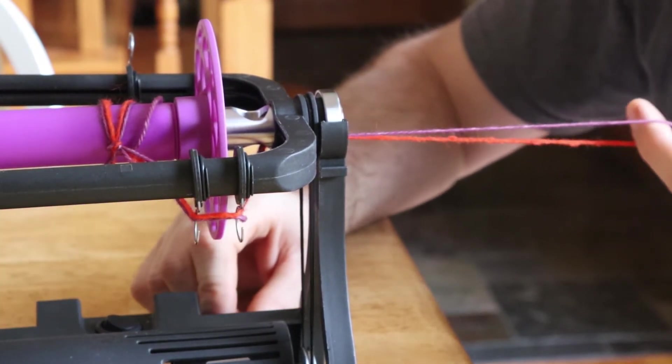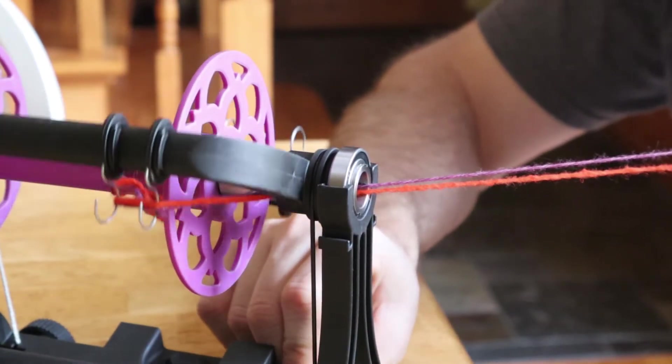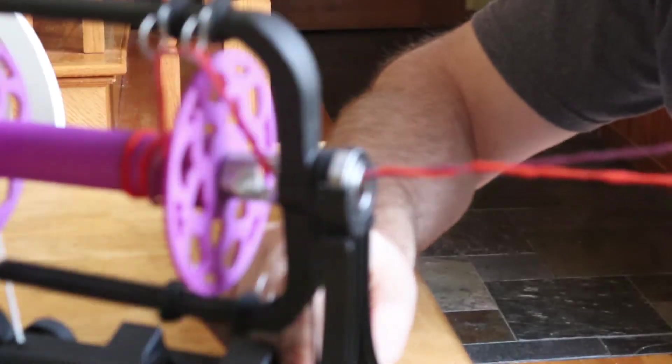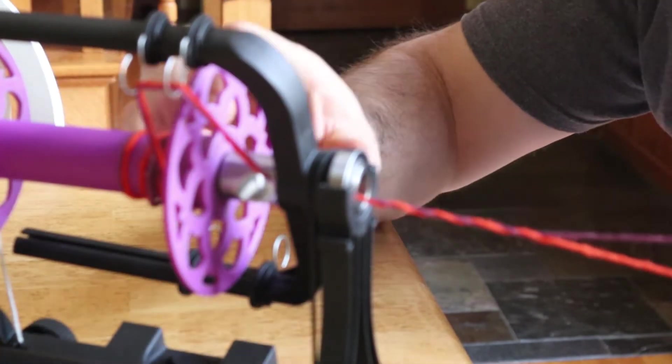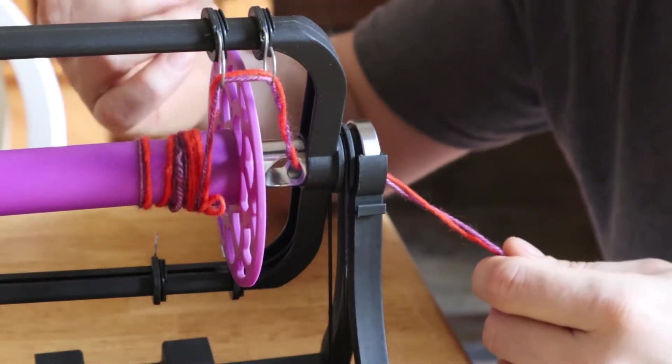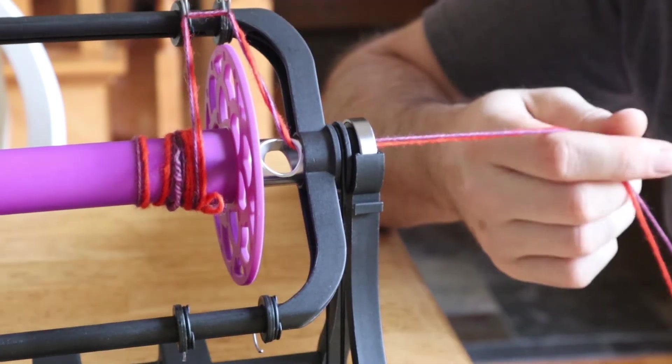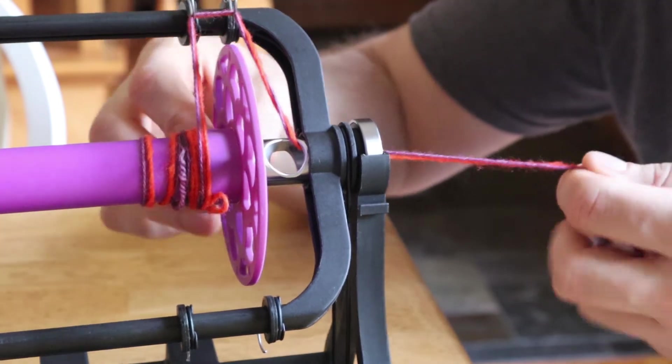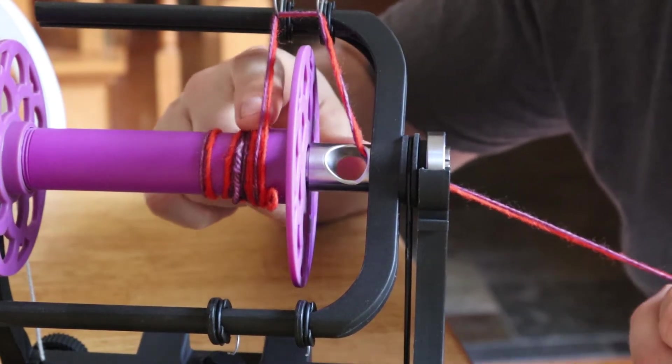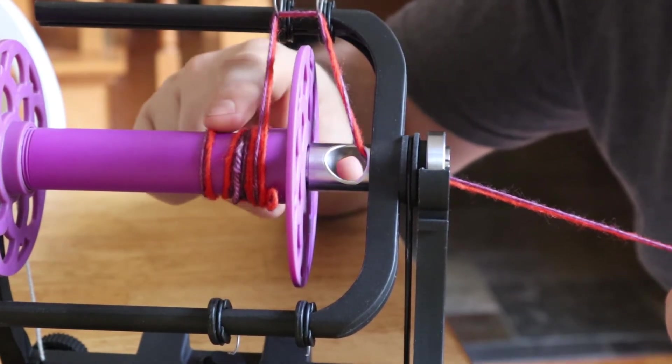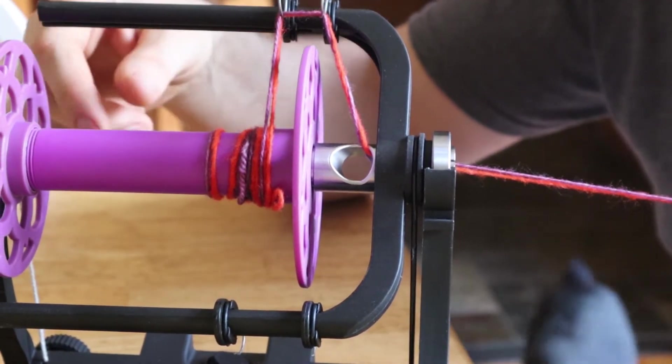So I have the tension set very high right now and what you're going to see is the bobbin is not even going to be moving and the yarn just goes directly onto the flyer. If you look at this yarn it's not twisted at all. There is a little bit of twist out here—you get one twist per rotation with this setup where the bobbin isn't turning at all because you have a very high tension. So you'll see here there's effectively no twist on the singles and that's because you get twist when the bobbin spins.